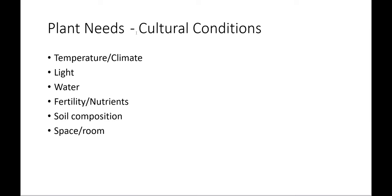The approach with this module on plant needs and cultural requirements is to begin to recognize what plants need: certain temperatures, light, water, nutrients, soil, and room to thrive. From there we learn how to find plants that will work within the location where the project is happening, or where plants are being grown for food or for sale.